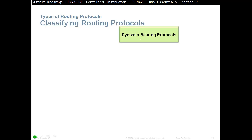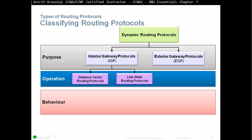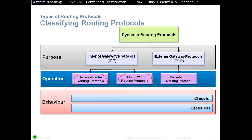Classifying routing protocols: dynamic routing protocols are classified as interior gateway protocols (IGPs) and exterior gateway protocols (EGPs). IGPs are within our company or autonomous system. EGPs are used between two different autonomous systems — for example, two ISPs like BT talking to another ISP like SKY would use exterior gateway protocols. Interior gateway protocols are classified into two types: distance vector routing protocol and link state routing protocol. Exterior gateway protocol has only one type, which is path vector routing protocol. Distance vector protocols have two sub-types: classful and classless.